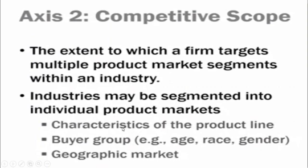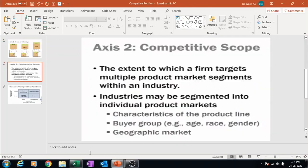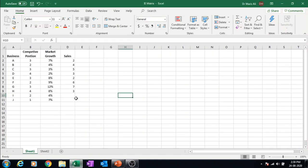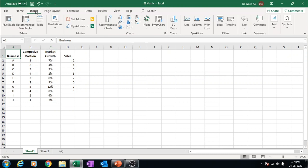Competitive position can also be determined by competitive scope — looking at how many product lines we have, how many diverse customer groups are served, and geographical expansion. Once you have determined competitive position and market growth, you can construct the Grand Strategy Matrix. First, list the businesses, then their competitive position and market growth values.